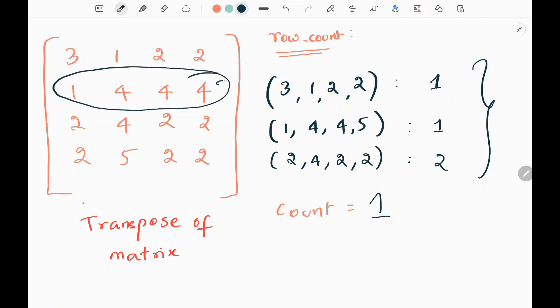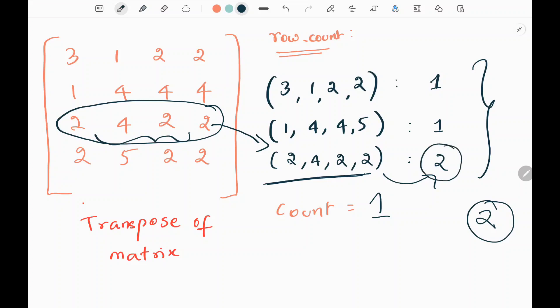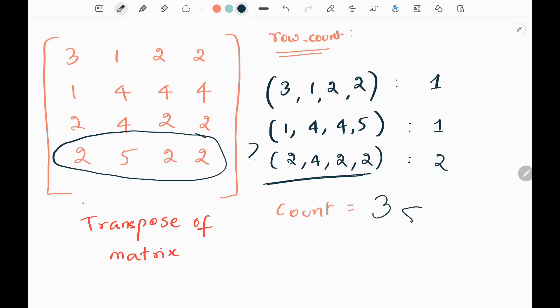Then we need to check whether we have this set of values or not in my row count dictionary. It is not there, so we won't add anything to my count. Then we pick the next set of values and then this particular set of values exists in my row count dictionary and the value is 2, which means I can form two pairs with the given column. So here we had two rows which were repeated and with the two rows I can form two pairs with this one column. That is the reason we are having two here. And then we need to add this 2 to the count. So now the count becomes 3. Then we need to pick the next set of values and this set is not in my row count dictionary. So we don't have to add anything to my count.